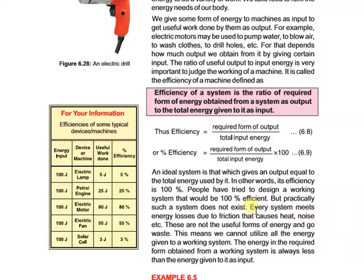We don't need sound energy or heat energy — we need the motor to shift water from the ground floor to the top floor. But some electrical energy is lost as sound and heat. For example, if 10% goes to sound and 10% goes to heat, then only 80% is used for useful work, so the system is not 100% efficient.